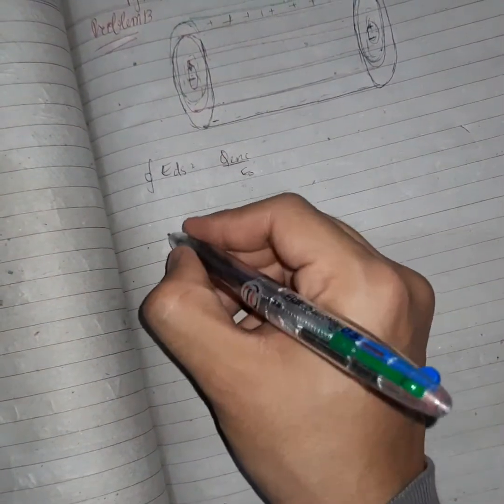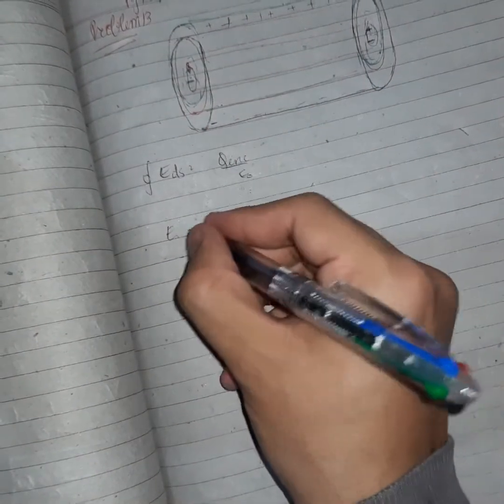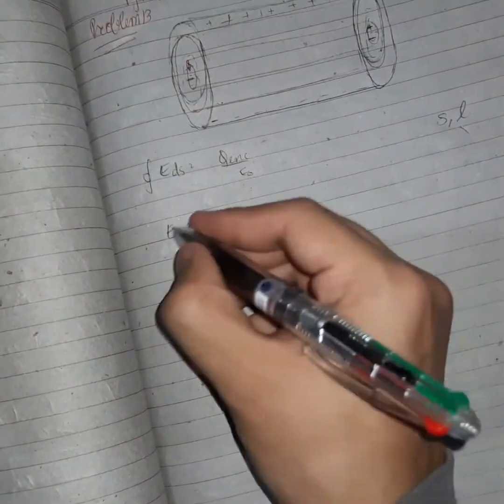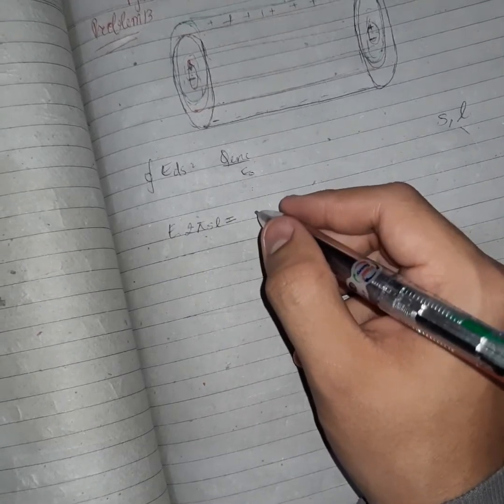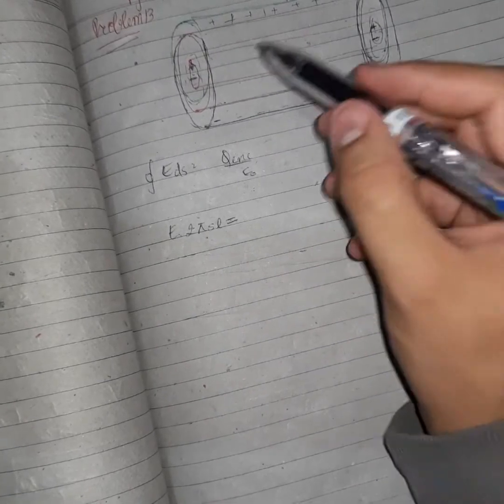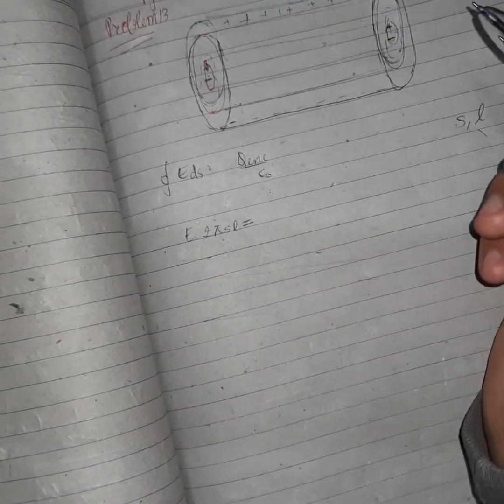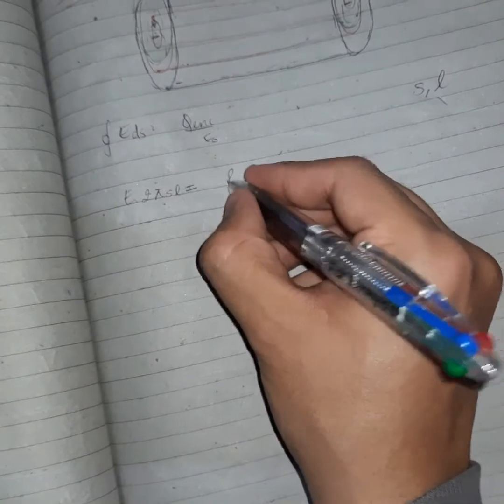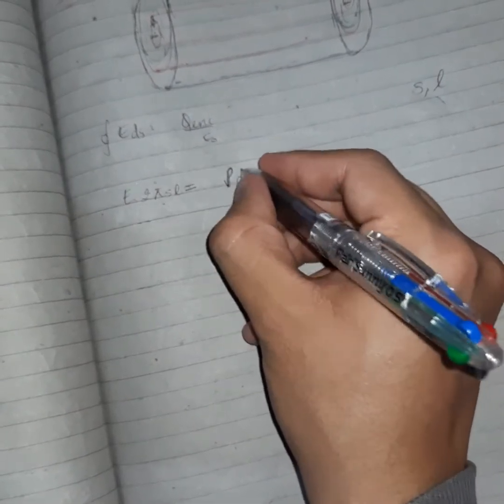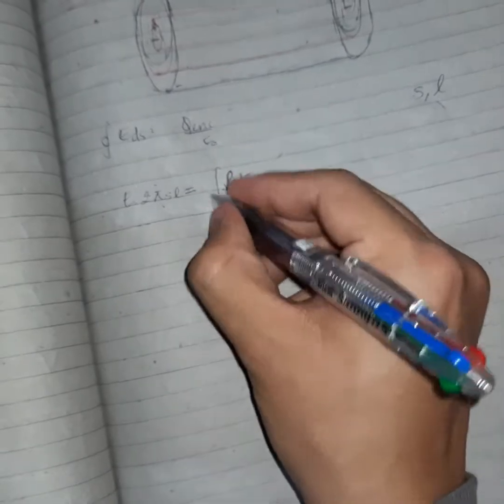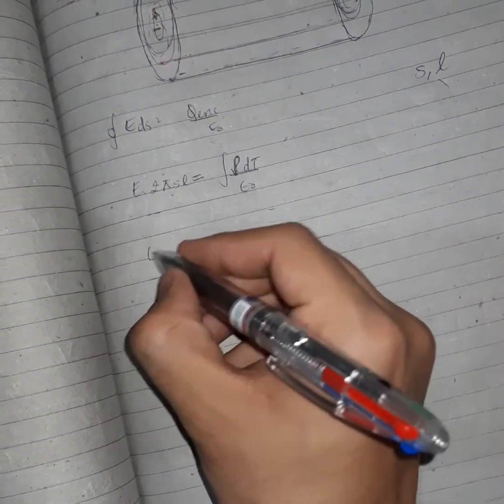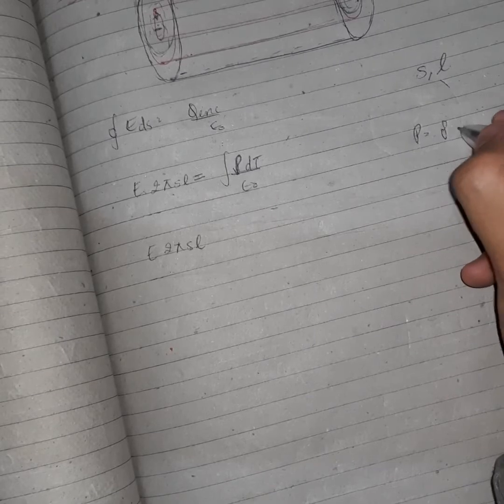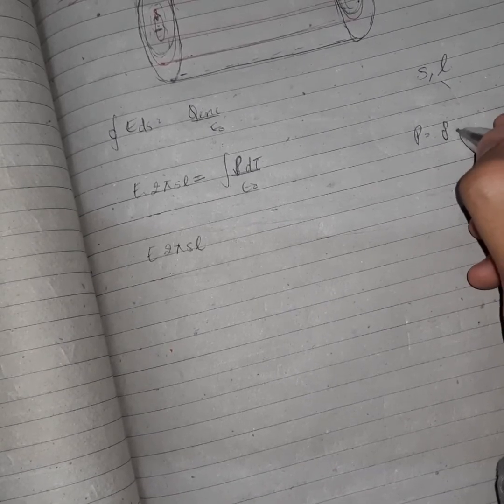E into dS taking a gaussian cylinder of radius s and length l, the same concept. Q enclosed in this case will be, as we are talking inside, we will be taking s and the polarization is uniform here. So q enclosed in terms of volume charge density can be written like this.